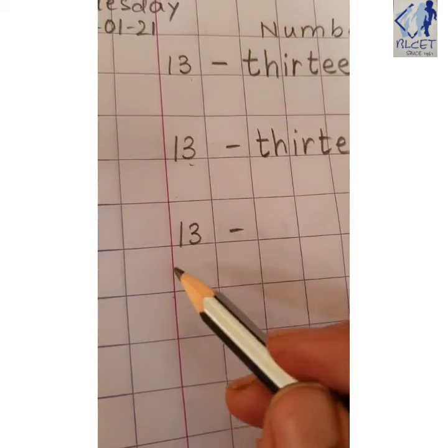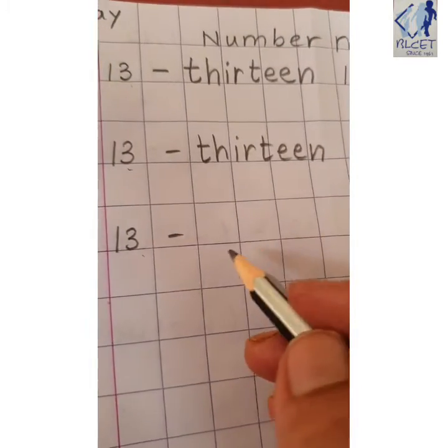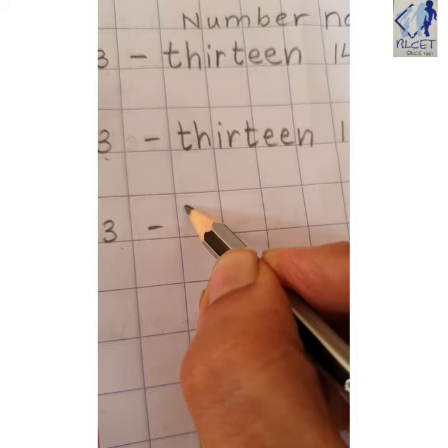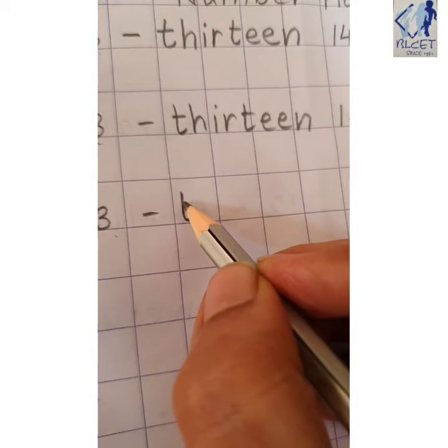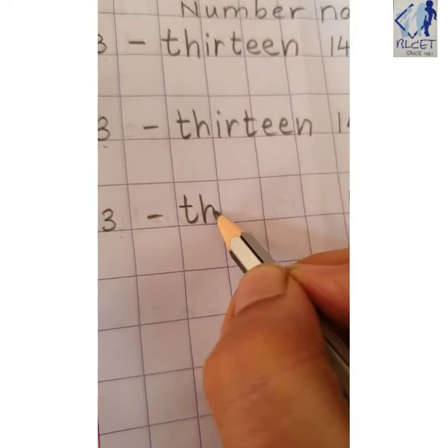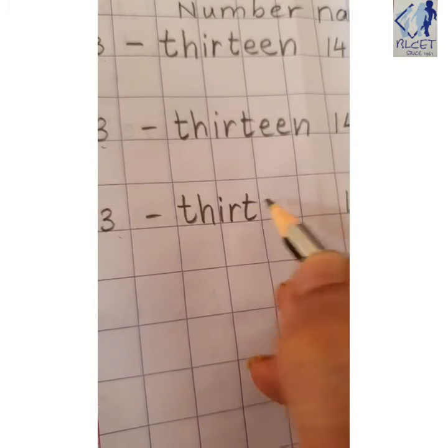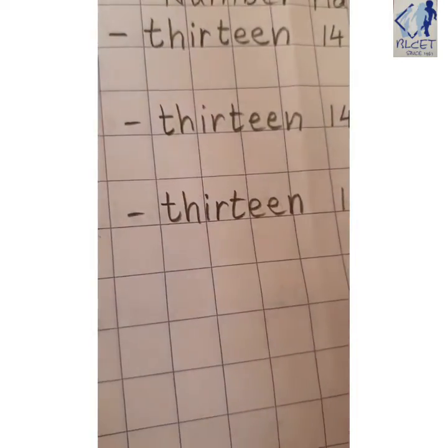One more time. 1, 3, 13 is the numeric. And you will write the number name with the spellings. 13. So, using which alphabet we are going to write? T-H-I-R-T-E-E-N. Write.